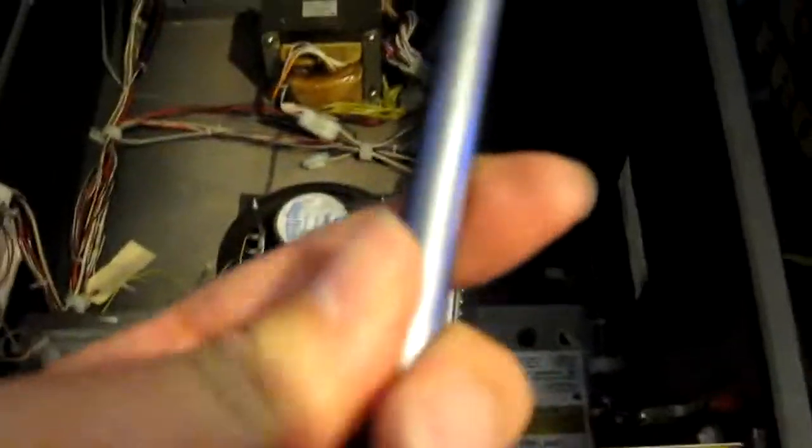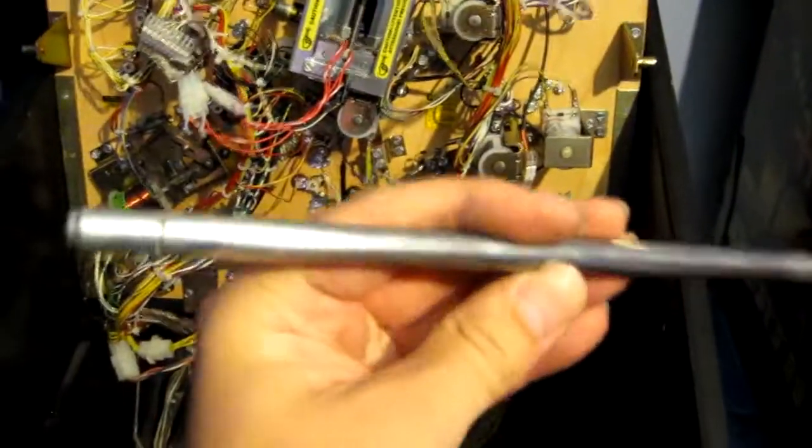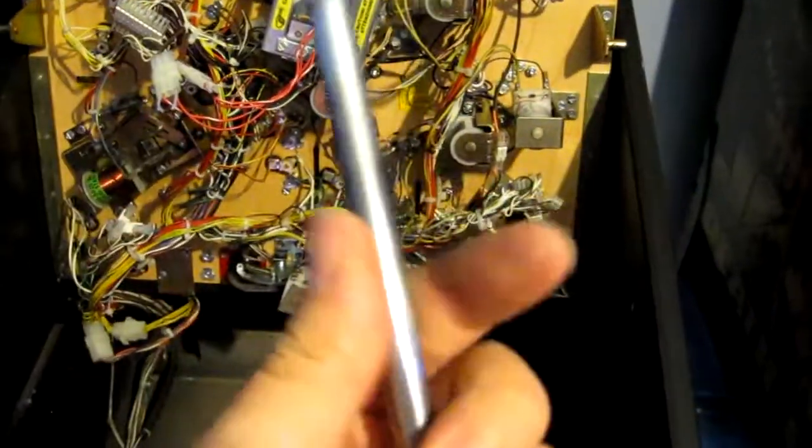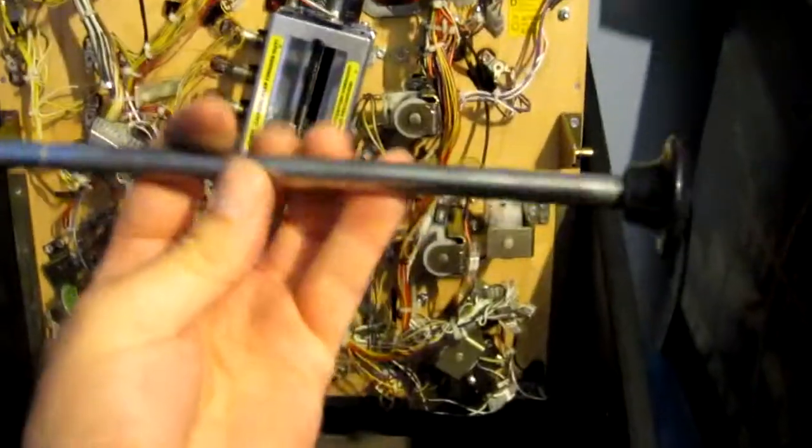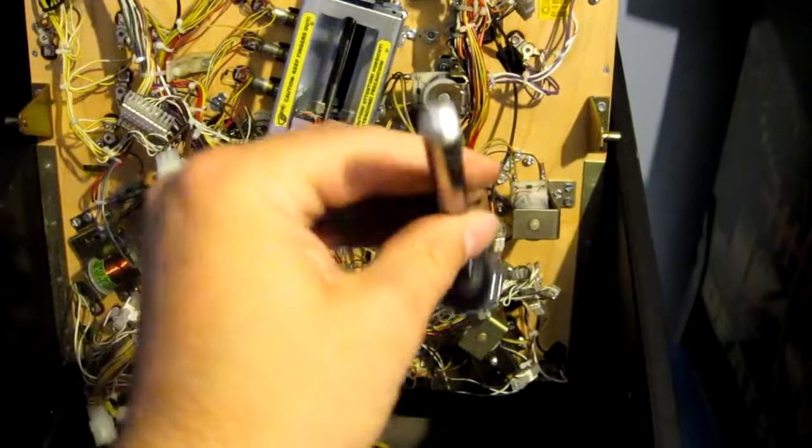Then basically clean the bearing with a cotton button, some isopropyl alcohol, and get any dirt out of there. That should be a lot smoother. I don't think it needs replacing, it's actually in fairly good condition, it's just a bit scratched up as they do get over time. If we can clean that up it'll come good and we'll replace this button.